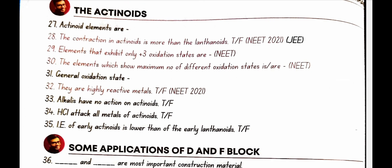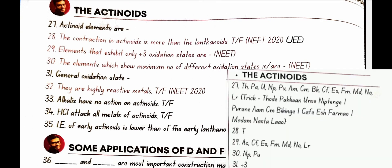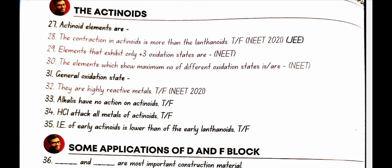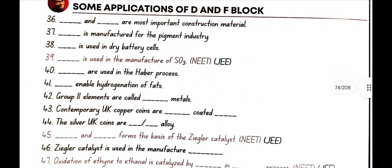The actinoids. Actinoid elements are Th Pa U Np Pu Am Cm Bk Cf Es Fm Md No Lr. You can learn the trick from the solutions. The contraction in actinoids is more than lanthanoids. Yes true. Elements that exhibit only plus 3 oxidation states are Ac Cf Es Fm Md No Lr. The elements which show maximum number of different oxidation states are Np and Pu. General oxidation state is plus 3. They are highly reactive metals. Yes true. Alkalis have no action on actinoids. Yes true. HCl attack all metals of actinoids. Yes true. IE of early actinoids is lower than that of early lanthanoids. Yes true.